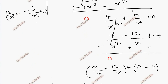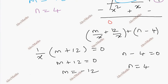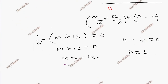Since remainder is 0, m plus 12 equals 0, so m is equal to minus 12. And n minus 4 equals 0, so n is equal to 4. Therefore the answer is m = -12 and n = 4.